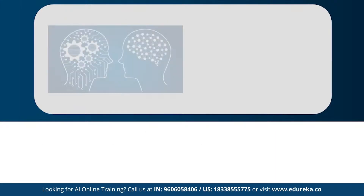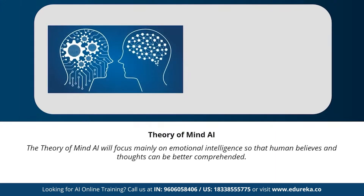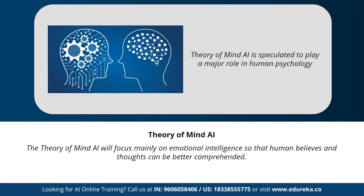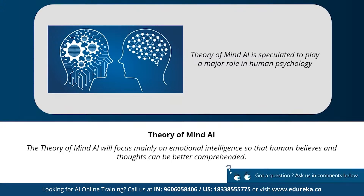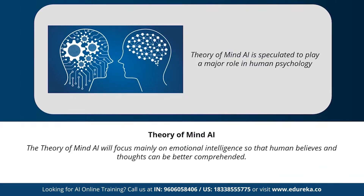Next we have theory of mind artificial intelligence. Theory of mind AI is a more advanced type of artificial intelligence, speculated to play a very important role in psychology. This type of AI will mainly focus on emotional intelligence so that human beliefs and thoughts can be better comprehended. Theory of mind AI has not been fully developed yet, but rigorous research is happening in this area.